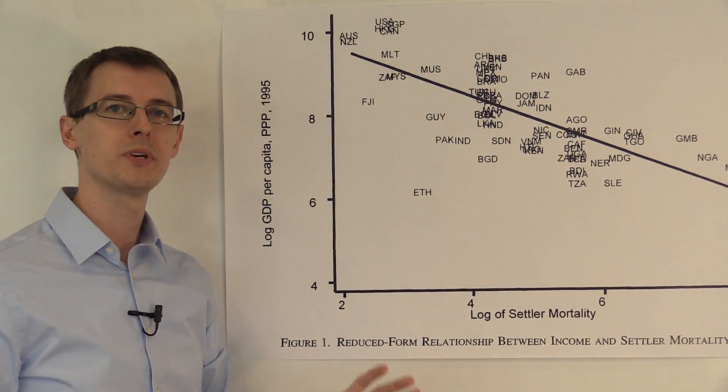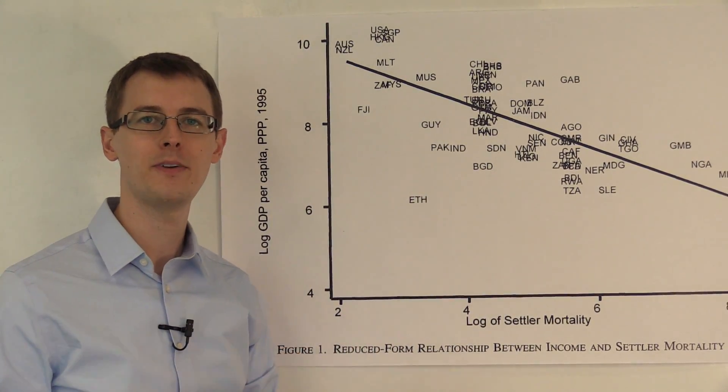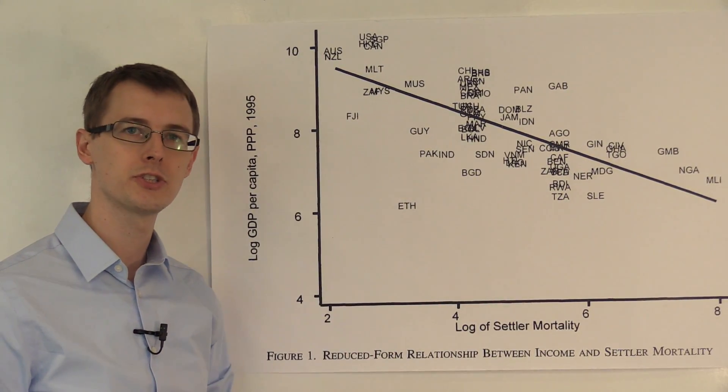So in the next module, we'll see how they compute that exact effect by using two-stage least squares.